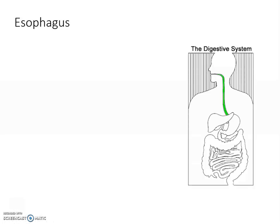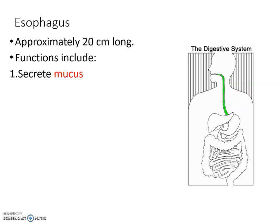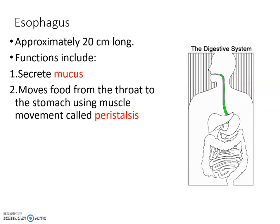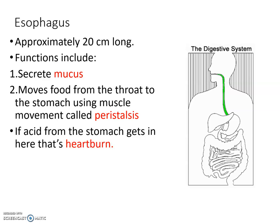The esophagus is about 20 centimeters long — only about 10 inches — and it secretes mucus to help move food along. A very important vocabulary word here is peristalsis. We don't consciously squeeze food toward our stomach; instead, food is naturally moved by peristalsis, which is muscular movement that carries food from the throat through the digestive tract.